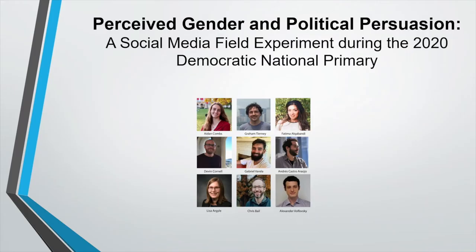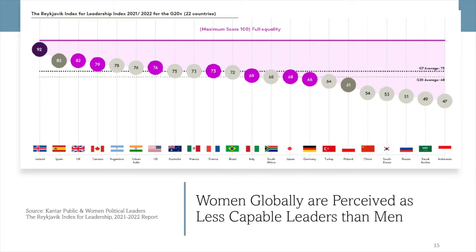Now let's get to an example: 'Perceived Gender and Political Persuasion,' the UniteDem experiment. A little background — women globally are perceived as less capable leaders than men, according to the Reykjavik Index for Leadership by Kantar Public and Women Political Leaders. A score of 100 would mean men and women were seen as equally capable leaders across the board. Iceland comes very close to that on average; the United States is at about 76. This demonstrates that people don't see women as being as capable leaders across a wide variety of occupations and settings.